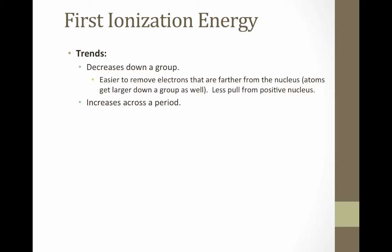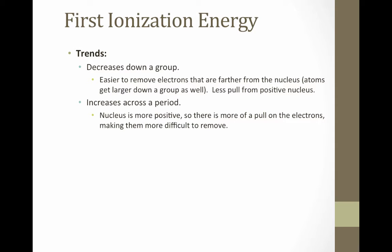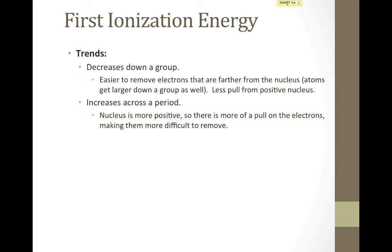Going across a period, however, ionization energy increases. As we go across a period, we're not adding any additional rings — we're just adding electrons to the same energy level. They're not getting any further away, but the nucleus is getting more and more positive because the number of protons is increasing. Therefore, the nucleus becomes more positive and more able to pull on the electrons, making it require more energy to remove them.